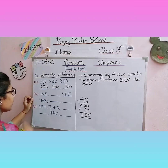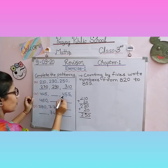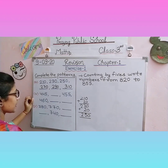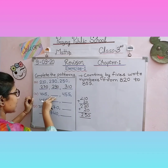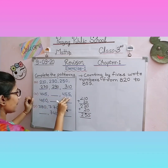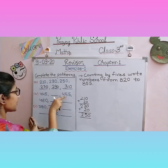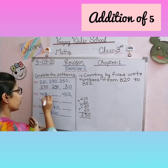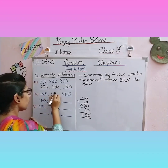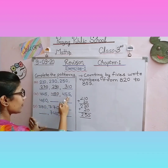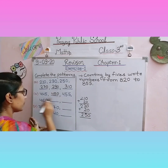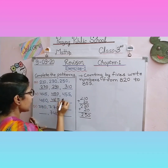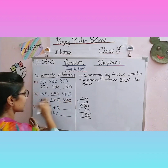Next is question B: four hundred forty-five, blank, four hundred fifty-five, four hundred sixty, blank, blank. How do we fill this? What is the difference between the numbers? Four hundred forty-five to four hundred fifty-five — we can complete this series by adding five each time. Four hundred forty-five plus five gives four hundred fifty. Four hundred fifty plus five gives four hundred fifty-five. Four hundred fifty-five plus five gives four hundred sixty. Four hundred sixty plus five gives four hundred sixty-five. Four hundred sixty-five plus five gives four hundred seventy.